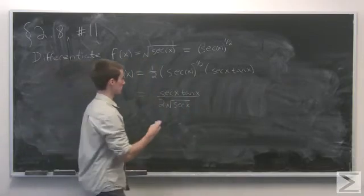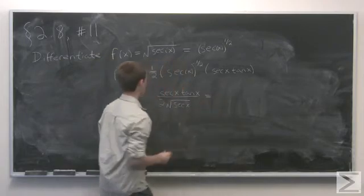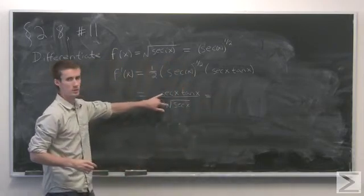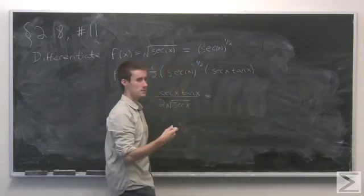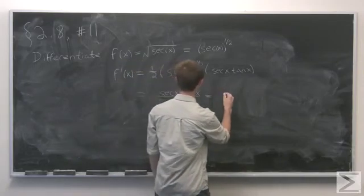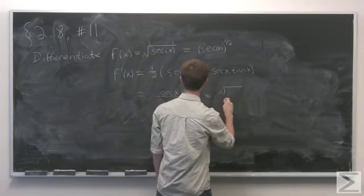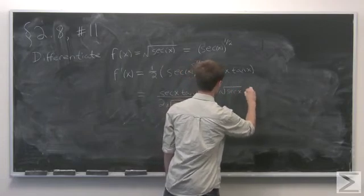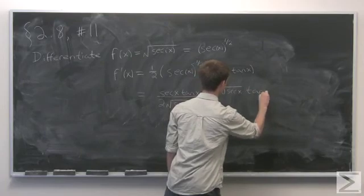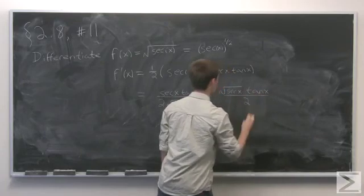Now we can simplify this a little bit more by doing some cancellation here with the secant. So we have secant x in the numerator and square root secant x in the denominator. We can rewrite this as square root of secant x times tangent x over 2.